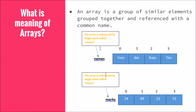Before we start with the differences, let's see what is the meaning of arrays. Array is nothing but a group of similar elements or objects which are grouped together and can be referenced with a common name. For example, here we see strings like Tom, Jim, Ram, and so on, and all these are going to be referred by a common name called 'names'.